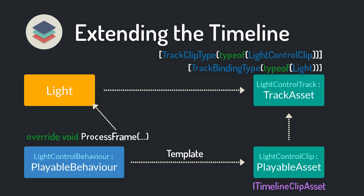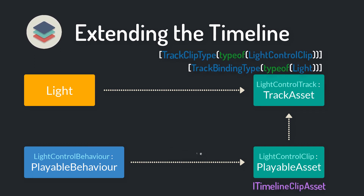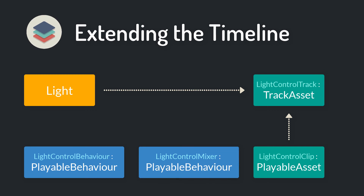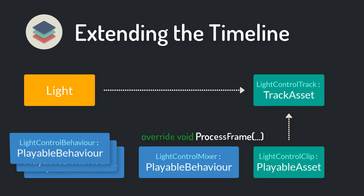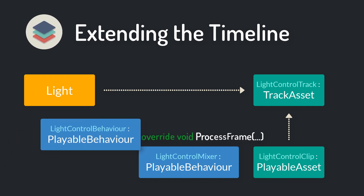Often you want a smooth transition between one clip and another — in other words, you want to blend multiple clips together. It's not enough to use the ProcessFrame method of the behavior script since it only acts on single objects. For blending multiple clips together you need to introduce mixers. Like the behavior script, a mixer also inherits from PlayableBehavior and overrides ProcessFrame. Now instead of processing only a single clip, the data of multiple clips is taken, blended together, and the resulting value is written to the light object.